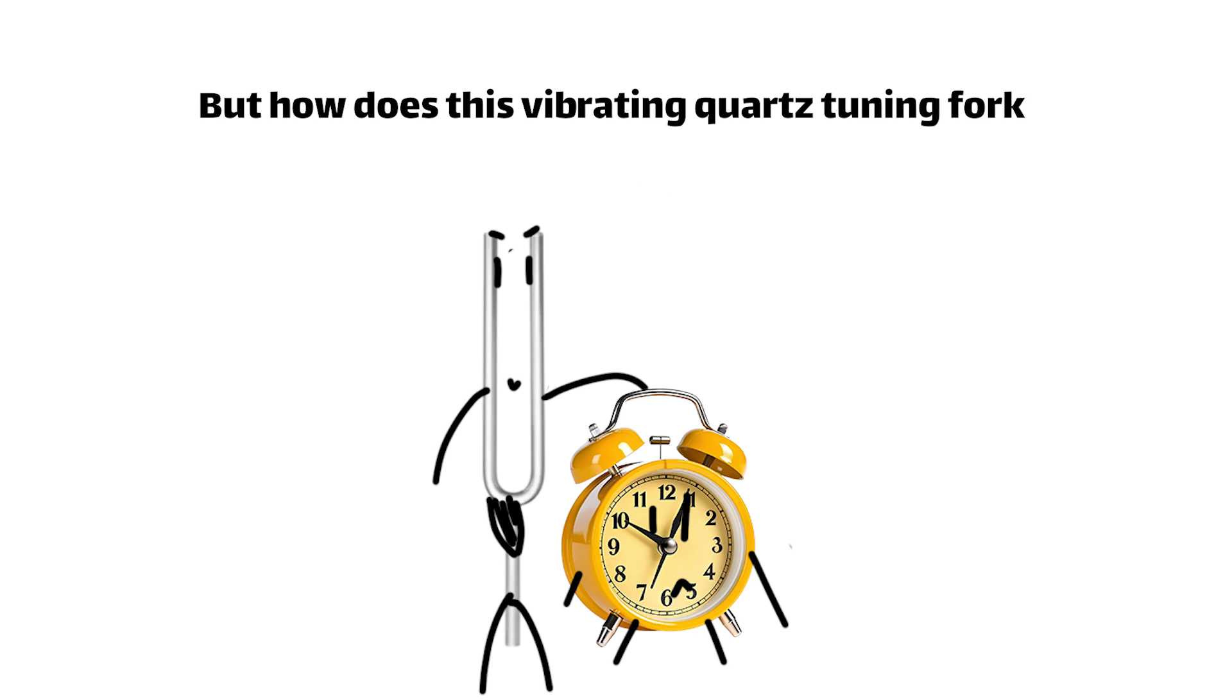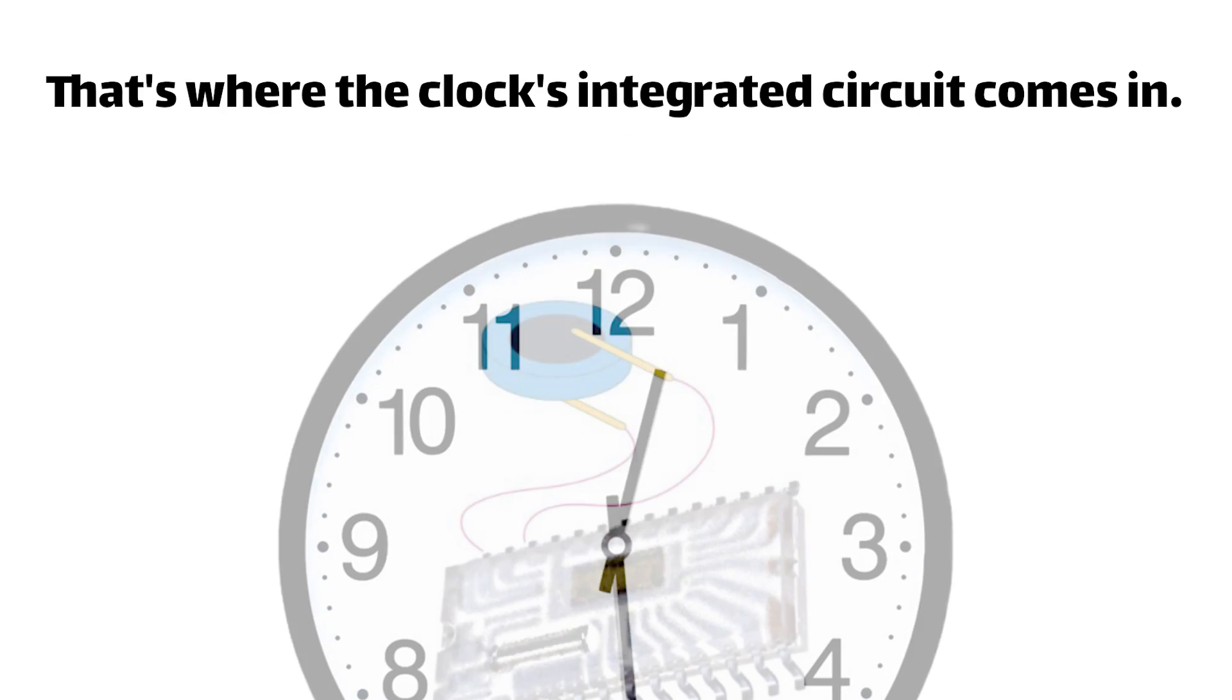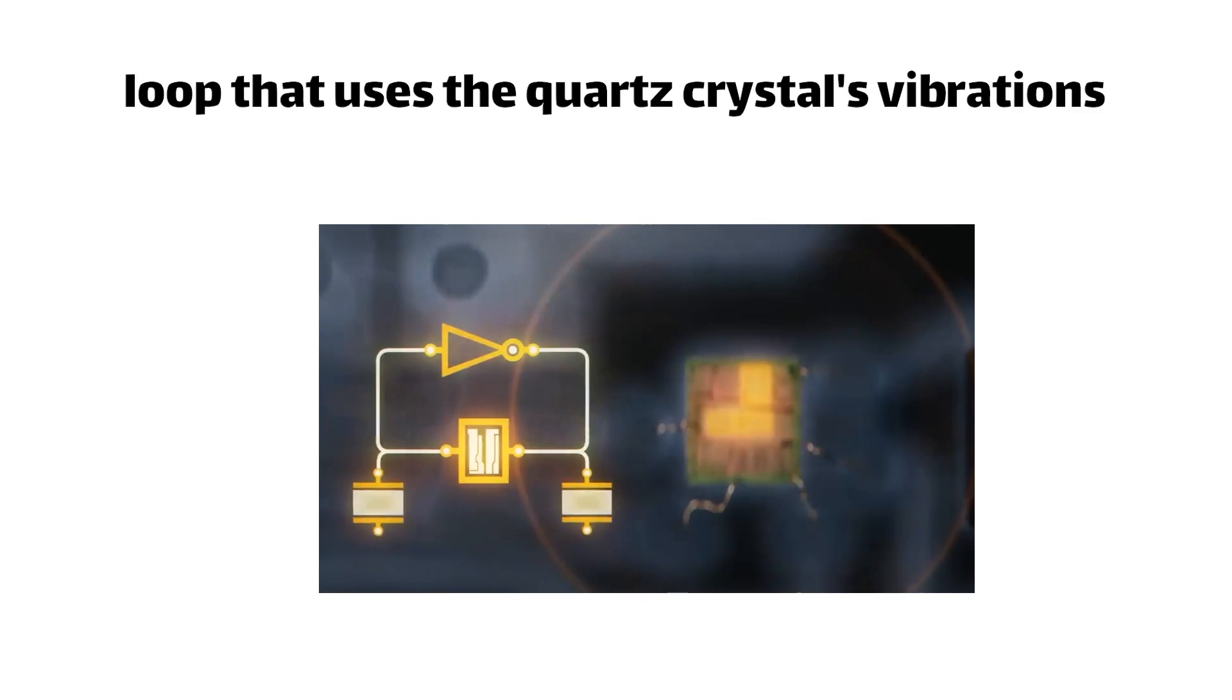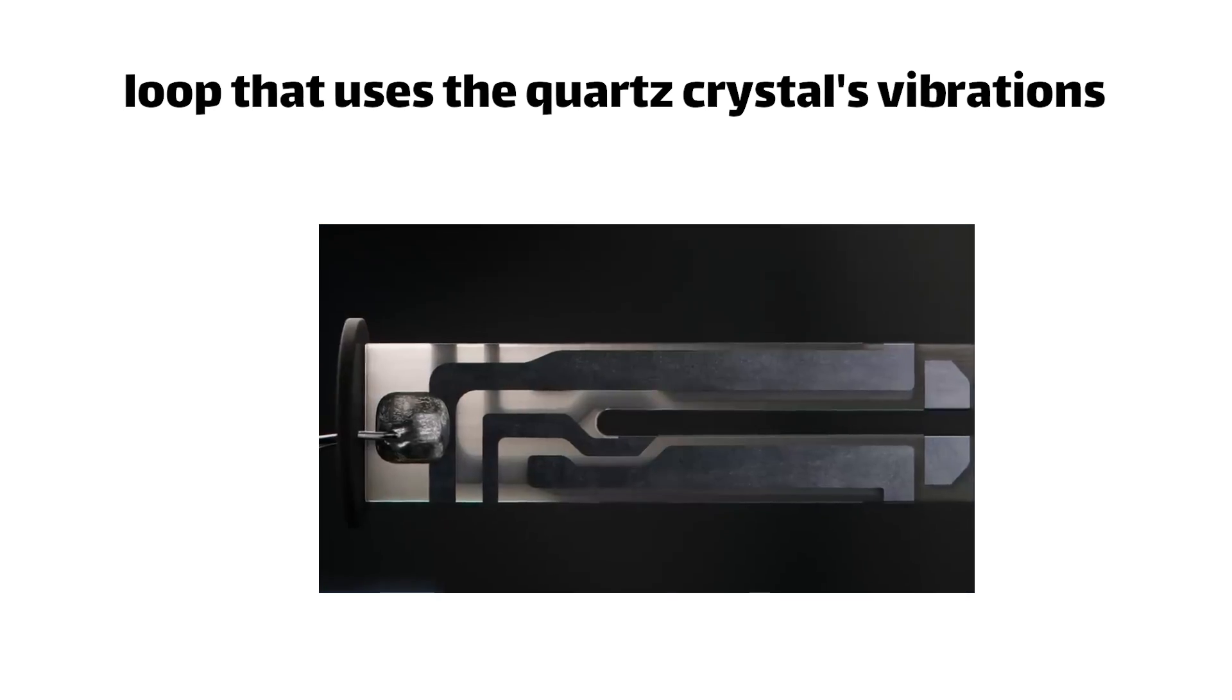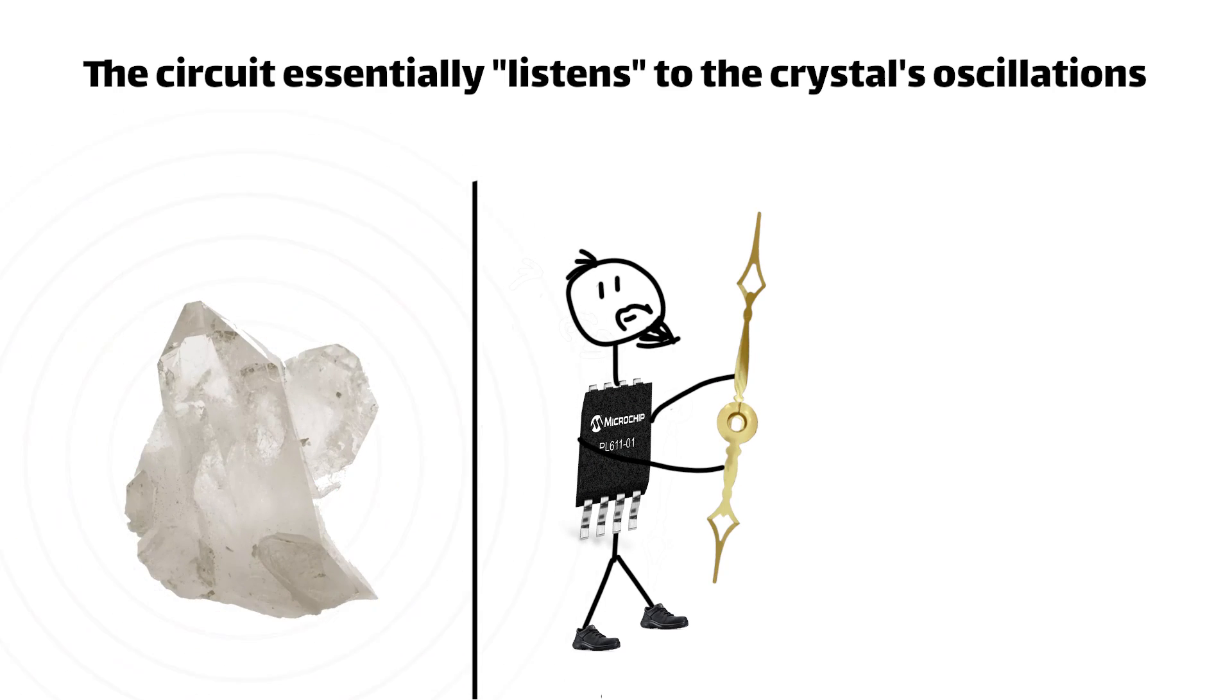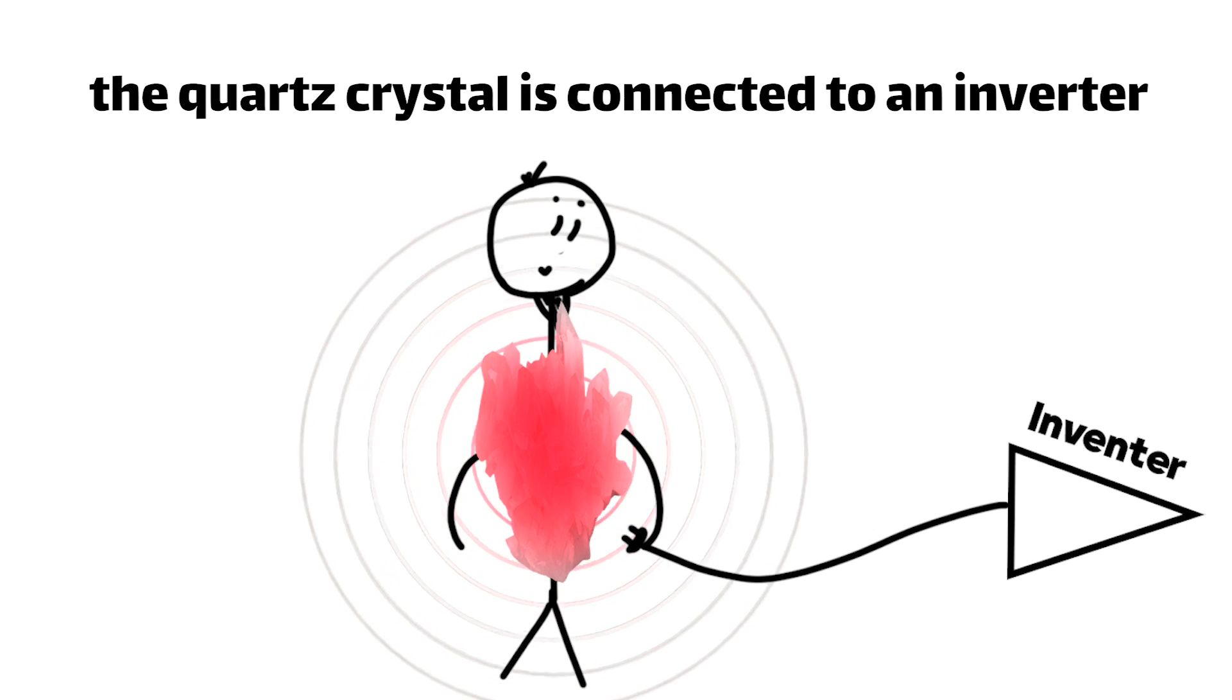But how does this vibrating quartz crystal tuning fork actually keep time? That's where the clock's integrated circuit comes in. This tiny chip contains a feedback loop that uses the quartz crystal's vibrations as a reference. The circuit essentially listens to the crystal's oscillations, and keeps the rest of the clock's components in sync.